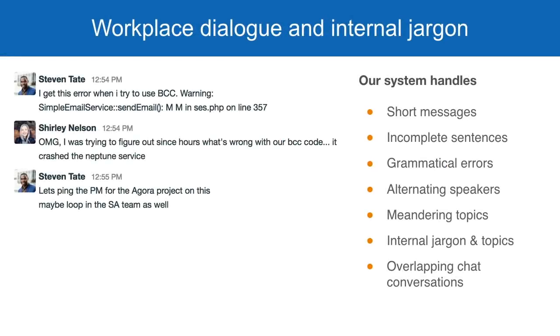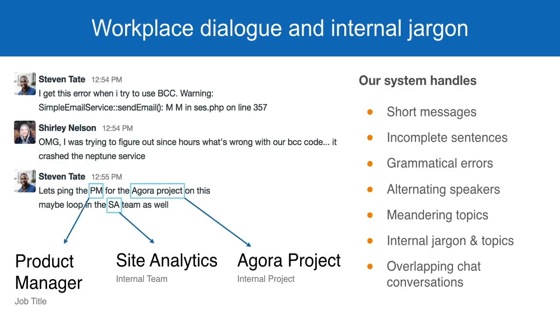Entity linking research often focuses on text from news articles or Wikipedia pages, which are grammatically correct and topically coherent. Traditional techniques struggle to obtain comparable performance on noisy text from messaging applications, resumes, or social media.